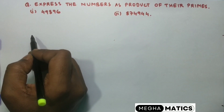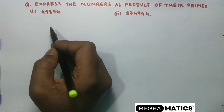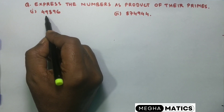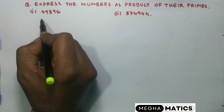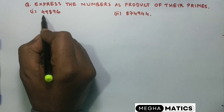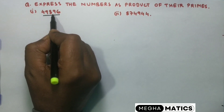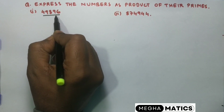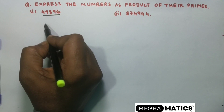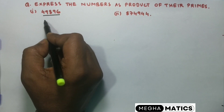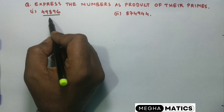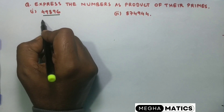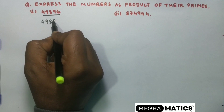Hello everyone. In this video we'll learn how to find the product of the prime numbers. Suppose we have a number that is 49,896. We'll have to find the prime factors and then multiply them — that means finding the prime factorization of 49,896.